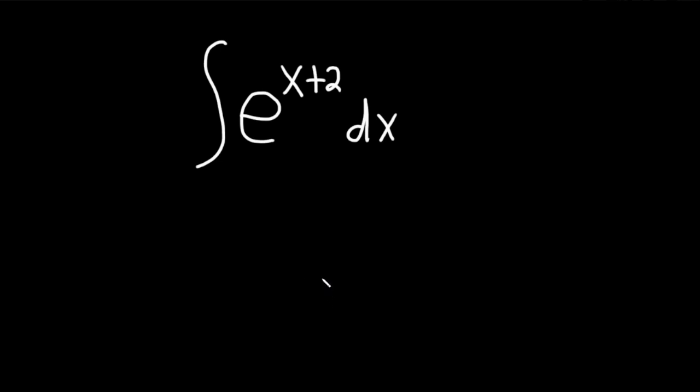Hi, in this problem we're going to integrate e to the x plus 2 with respect to x. So we know that if we just had e to the x and we integrate it, we get e to the x. But here we have an x plus 2, so there's a couple ways to do this.